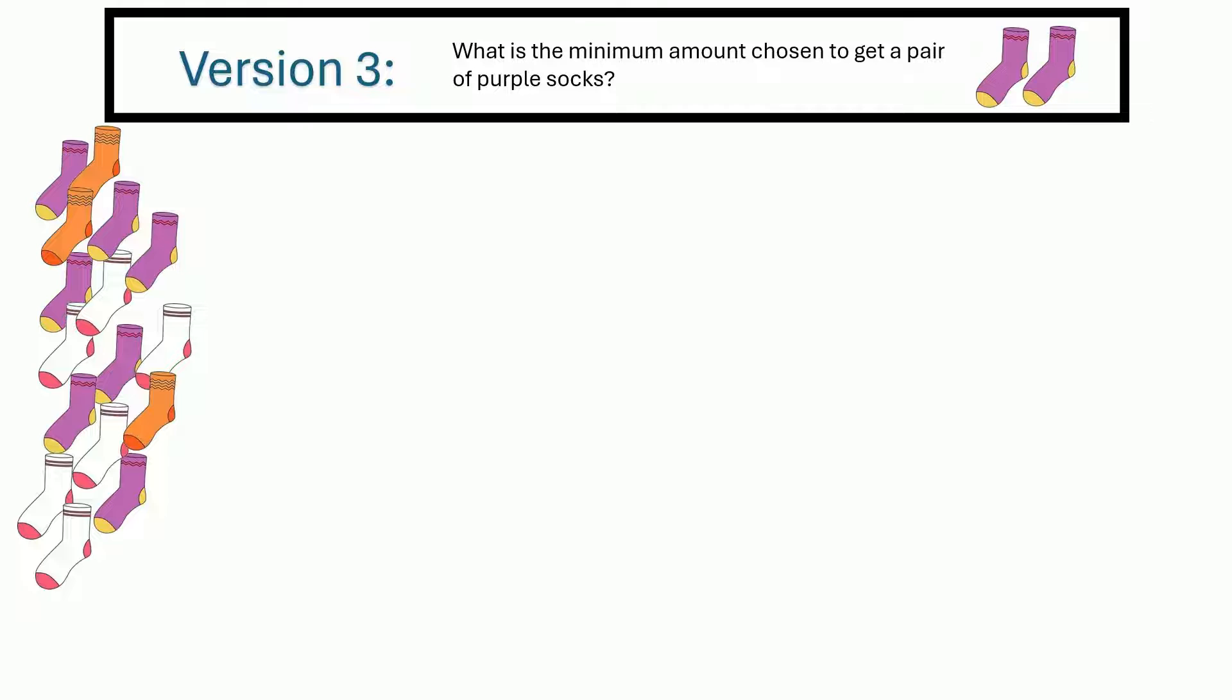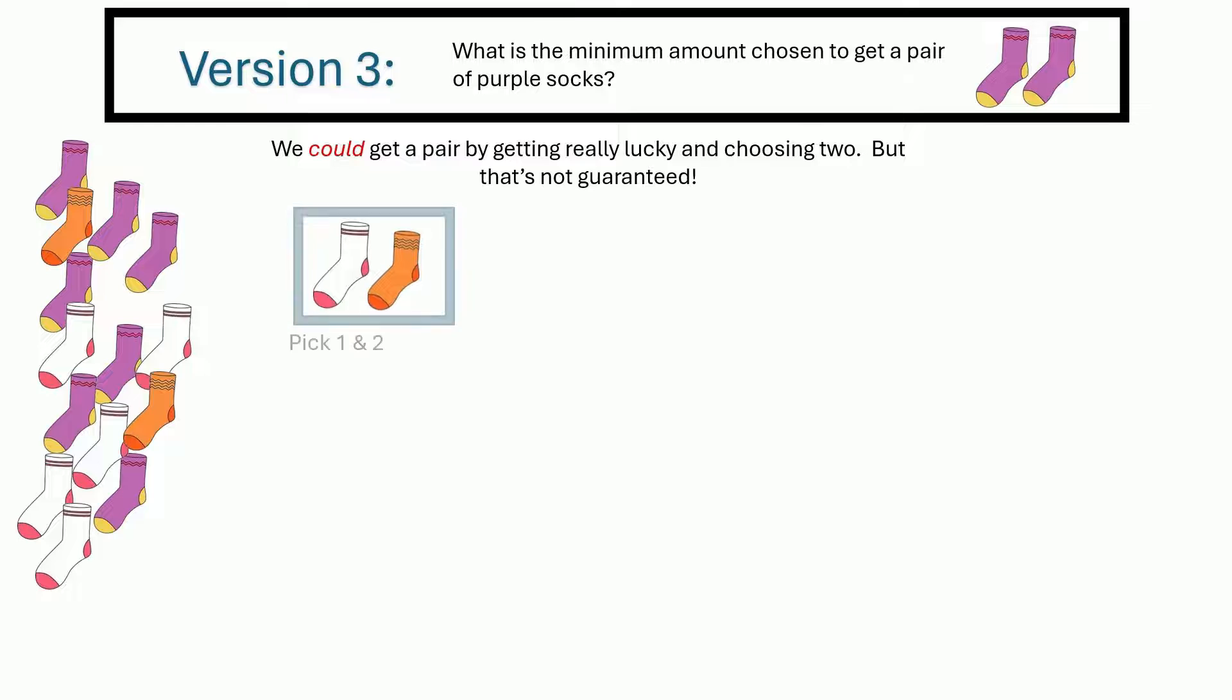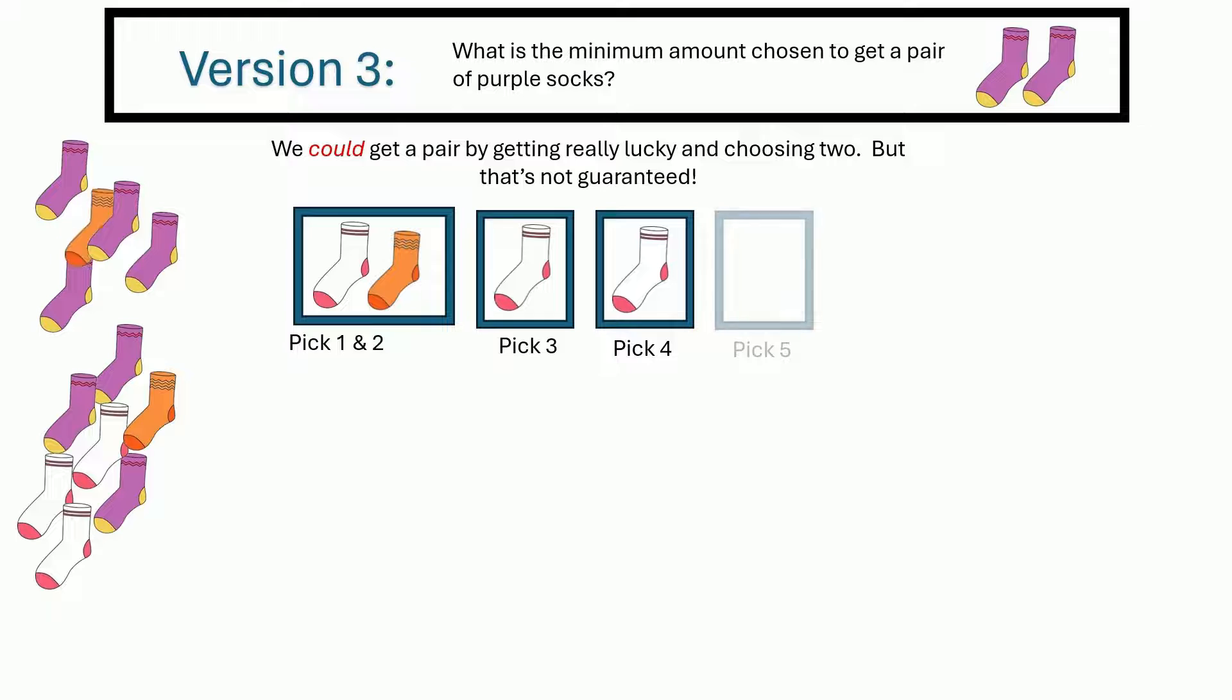Now we could possibly get a pair of socks from just two, right? But we've got seven purple, six white, three orange. We have to grab a certain amount. What's the smallest amount to grab that would guarantee no matter what, you've got a pair of purple socks in there. So let's break this down. Let's see how this works, right? So you pick two, they may or may not be a pair. We're talking about guaranteed for sure. You're going to get a pair of purple socks.